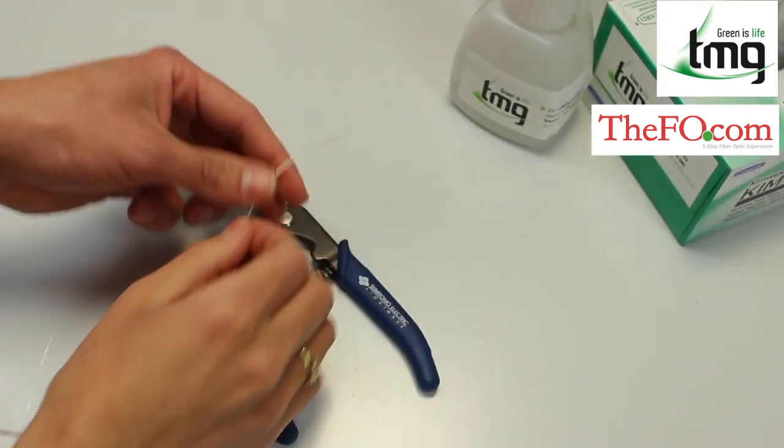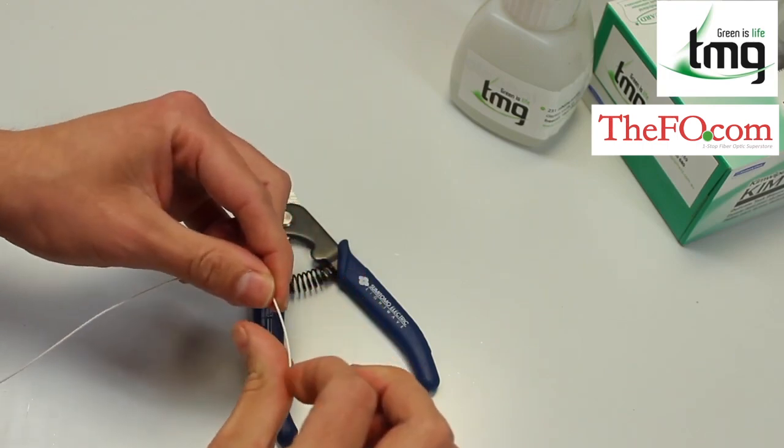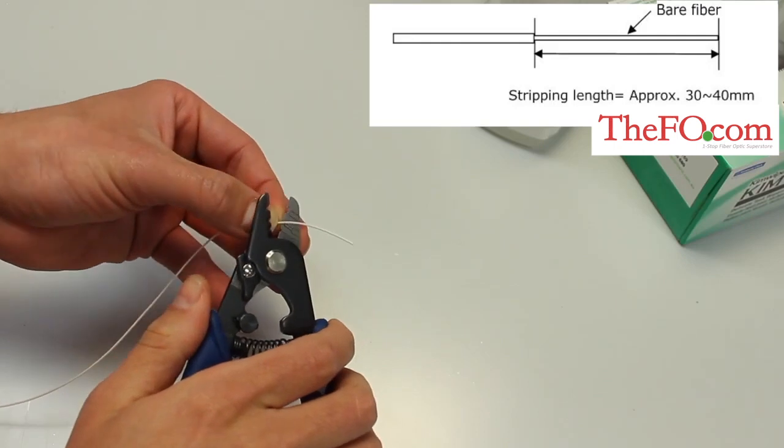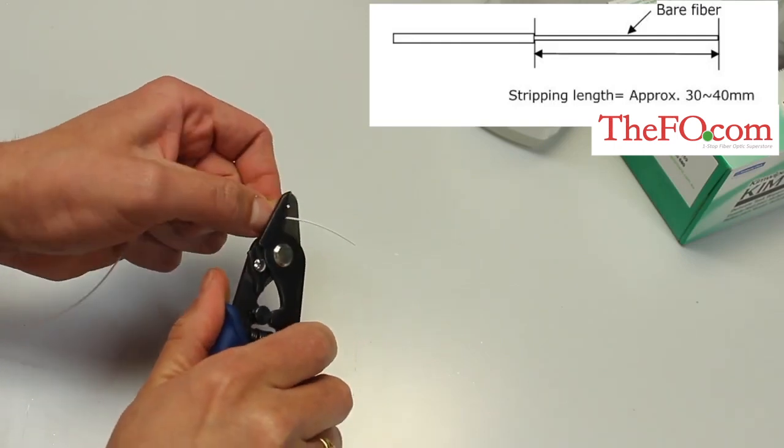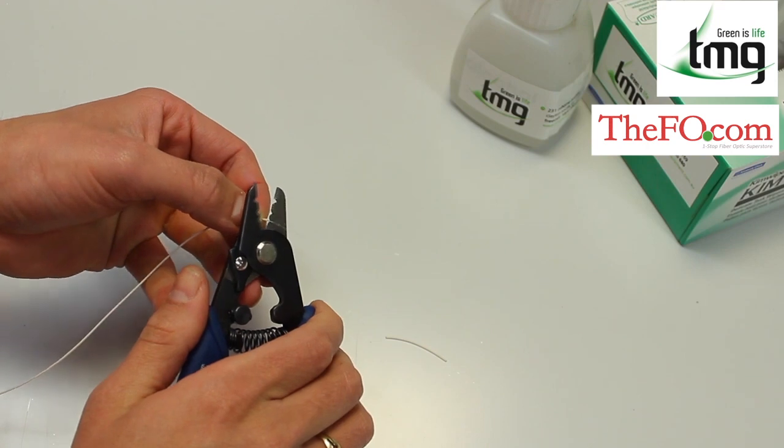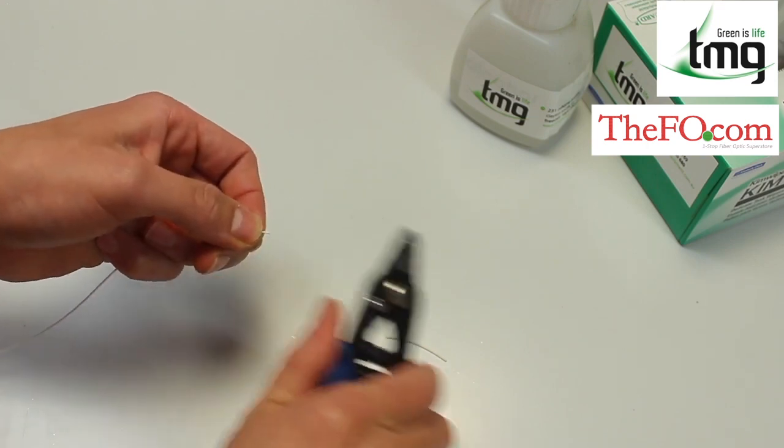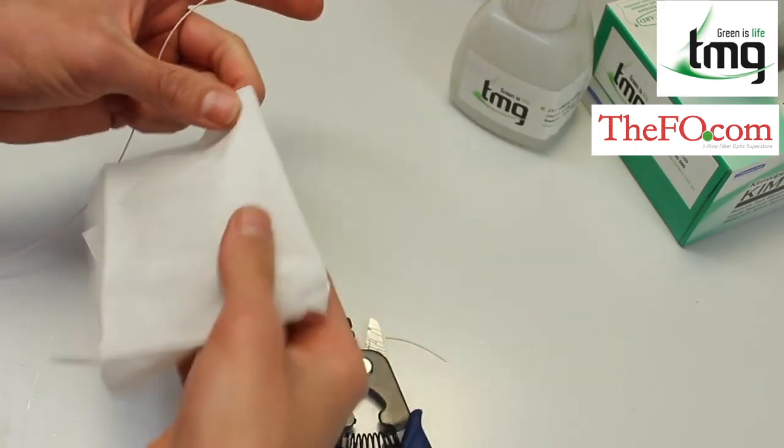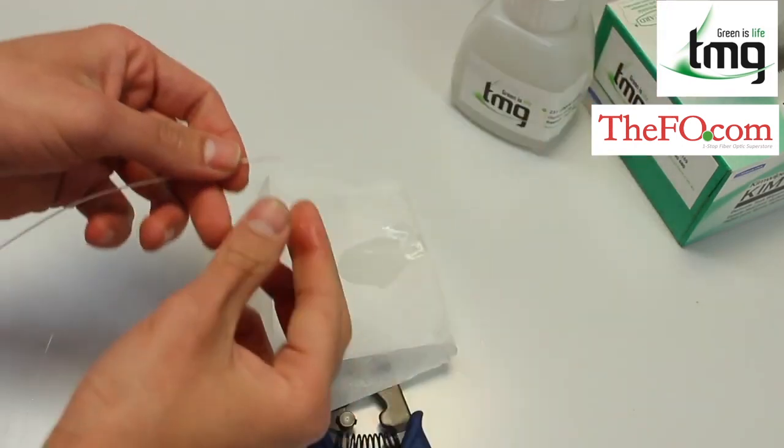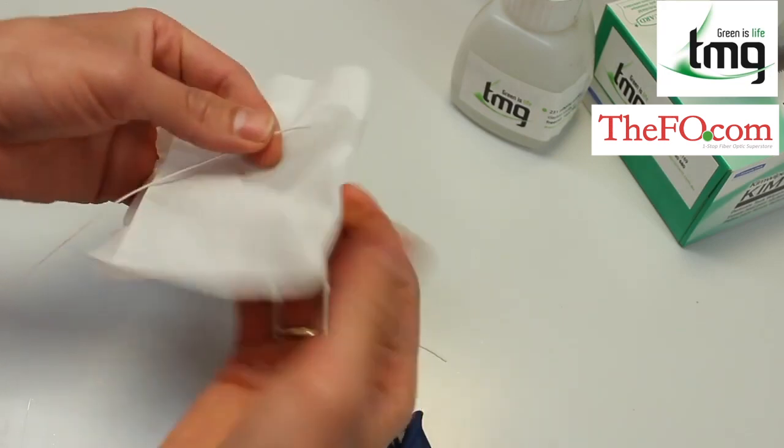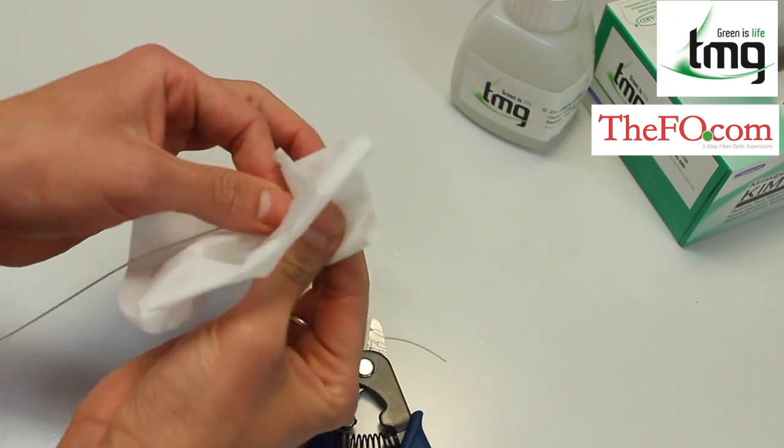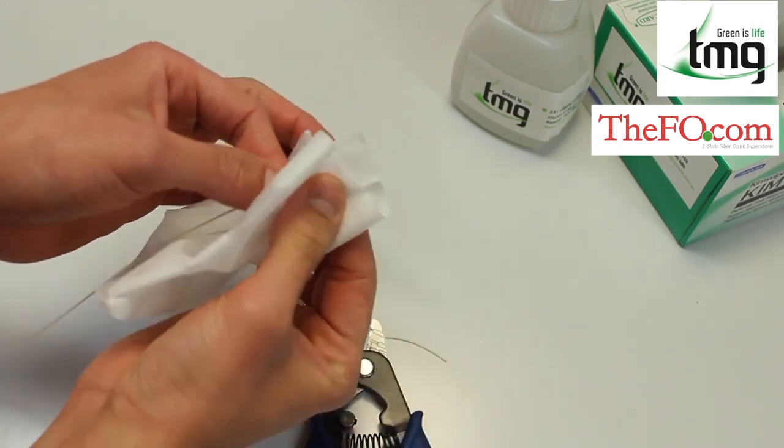First you will need to prepare your fiber. With your tri-hole strippers, remove 30 to 40mm of the fiber coating. Then carefully remove the buffer coating. Now take your lint-free wipes, moisten with some pure alcohol and clean until it's squeaky clean. Then take a dry part of the cloth just to dry off the fiber.